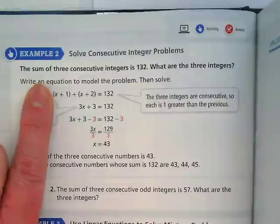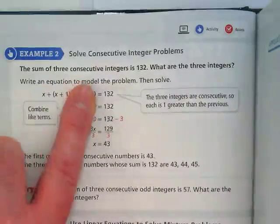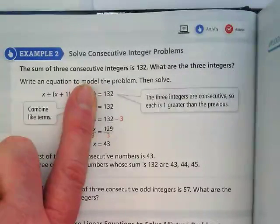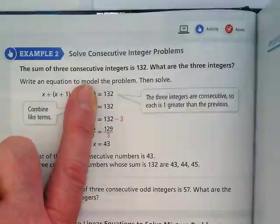The sum means what are we going to be doing with something? We're adding. What do you think consecutive means? 7, 8, 9 are consecutive.